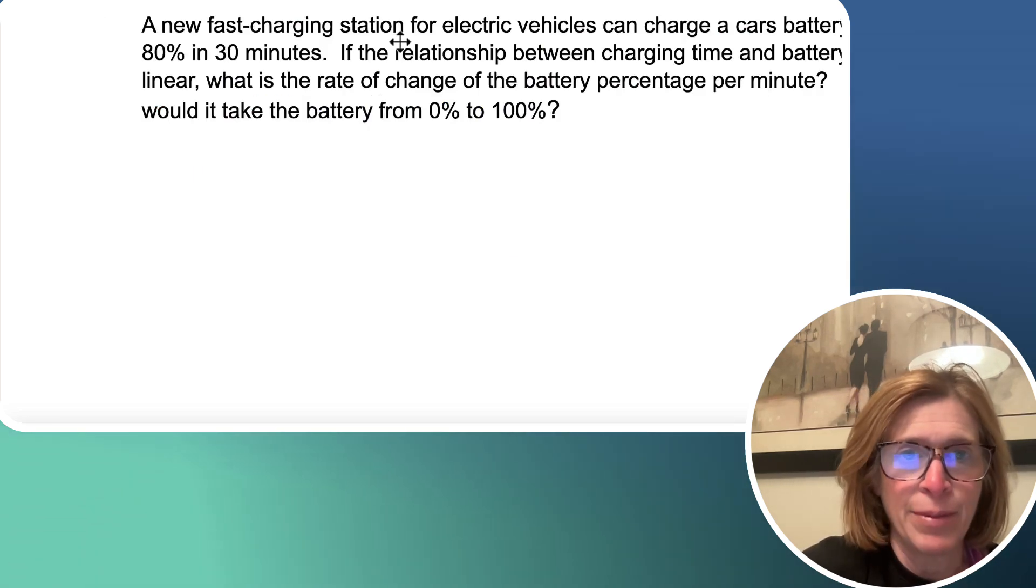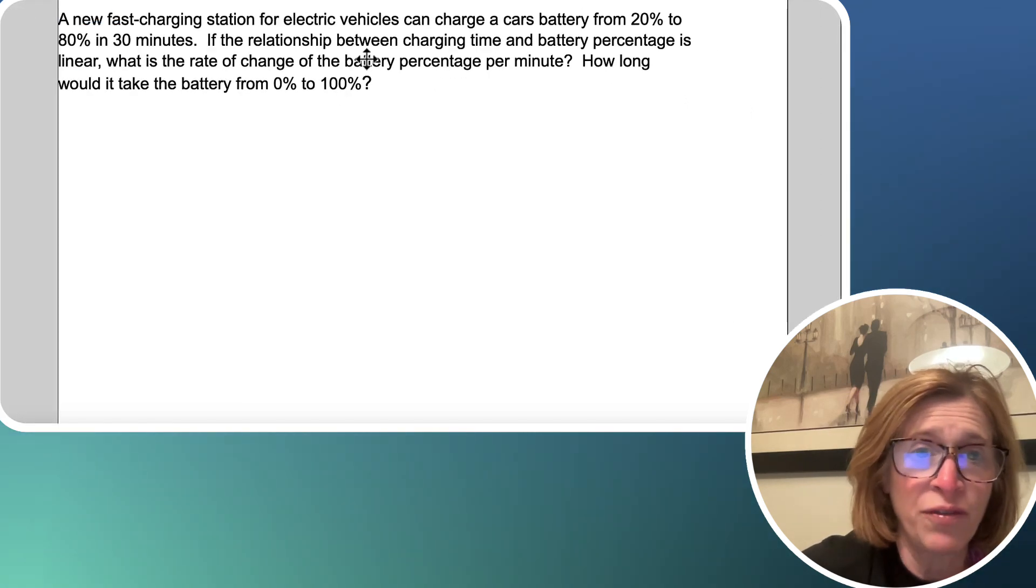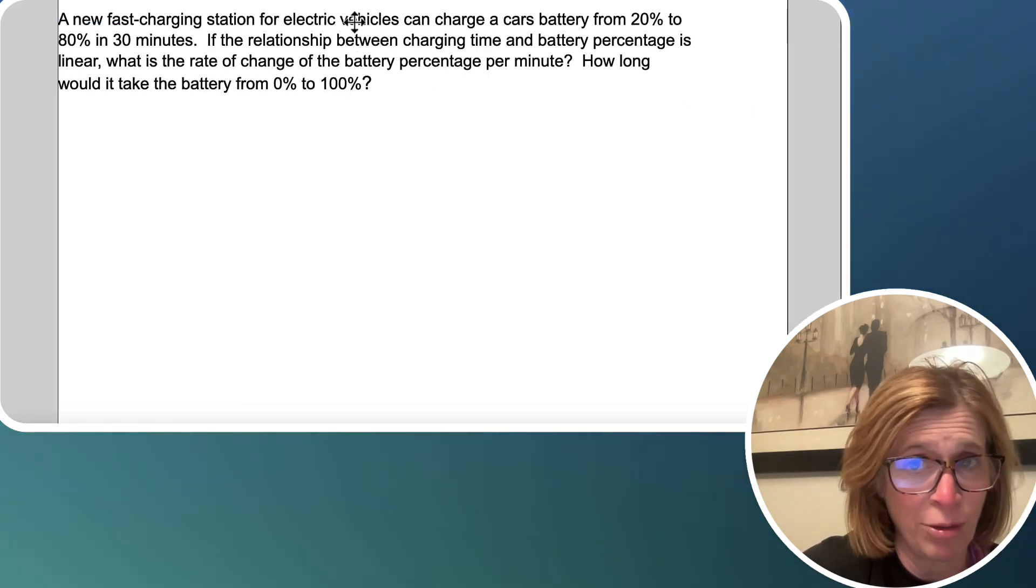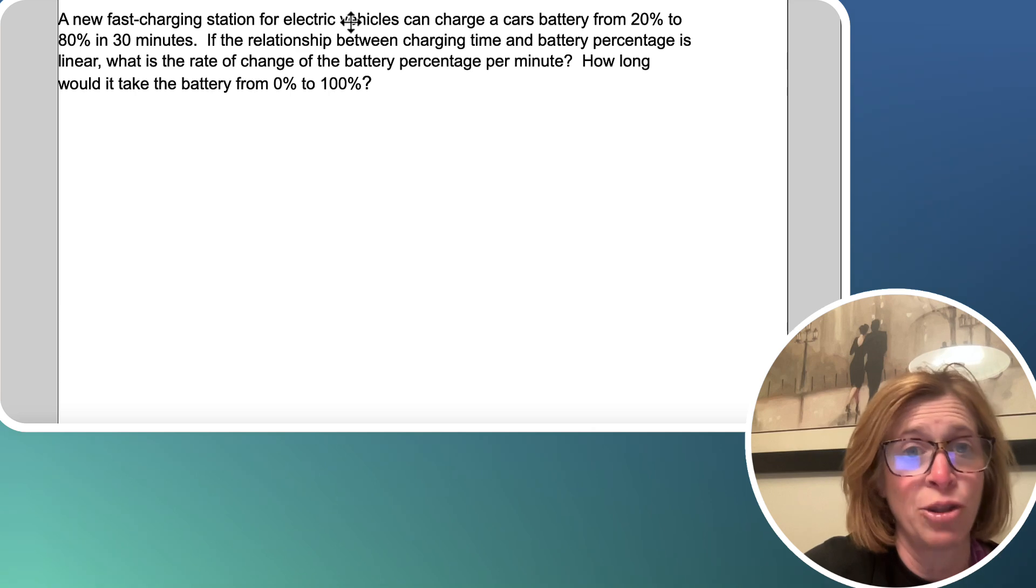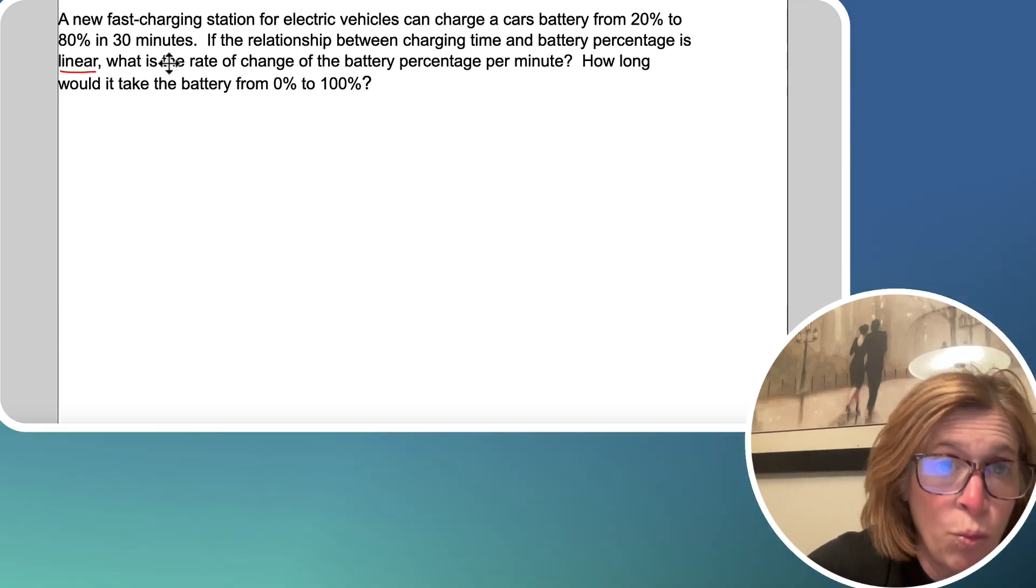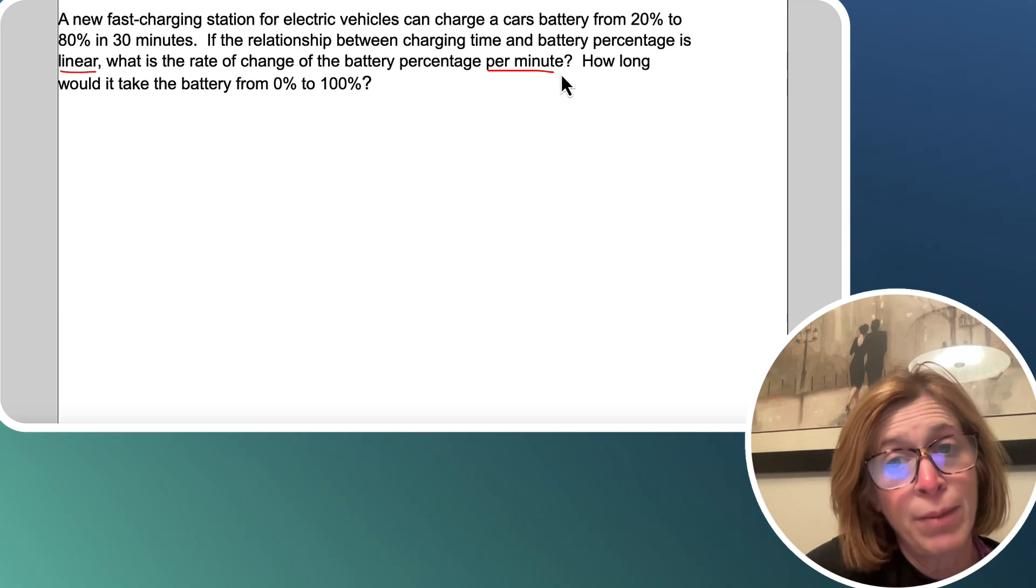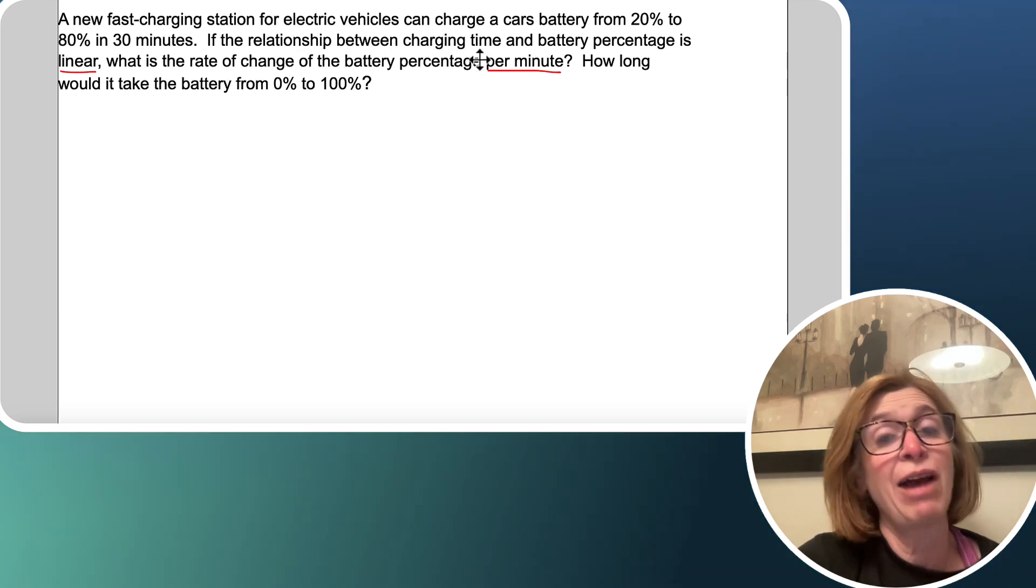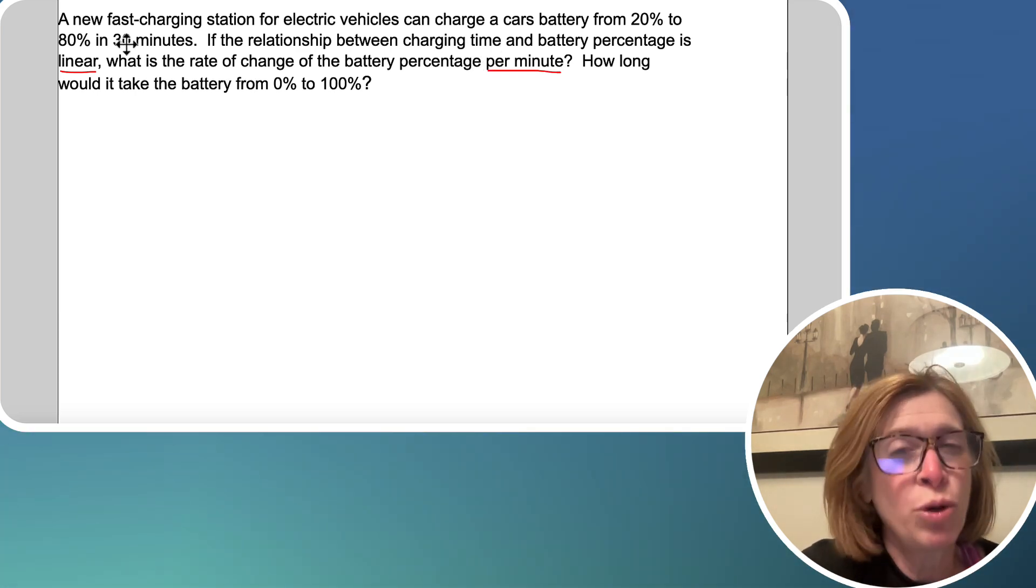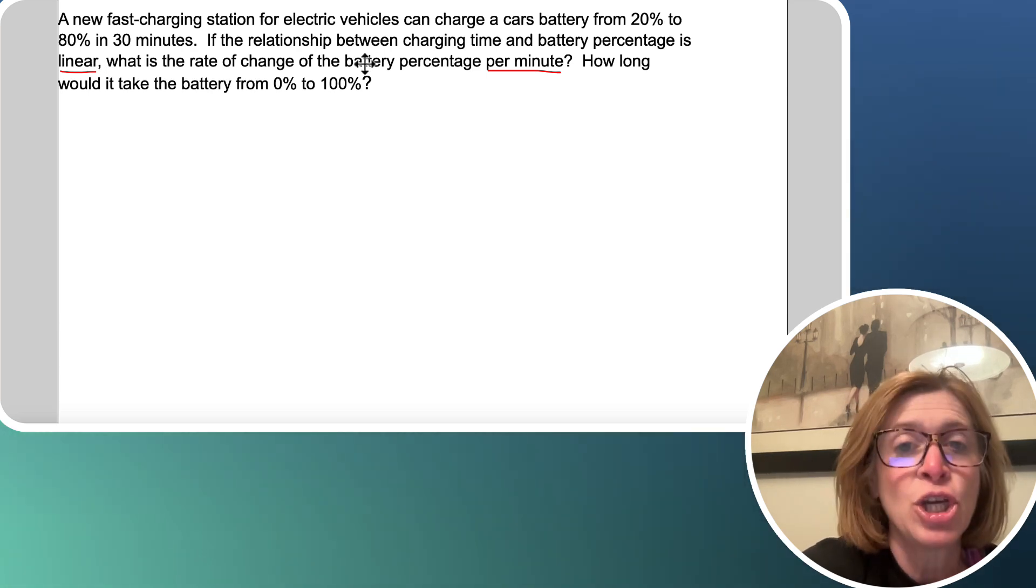We have a question. A new fast charging station for electric vehicles can charge a car's battery from 20% to 80% in 30 minutes. If the relationship between charging time and battery percentage is linear, what is the rate of change of the battery percentage per minute? In this question, it actually tells you per minute, but it won't always say that. It could just say, find the rate of change of the battery percentage.